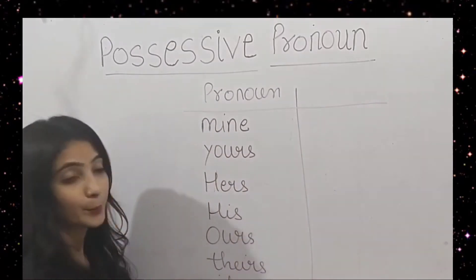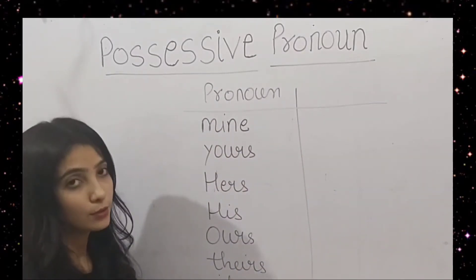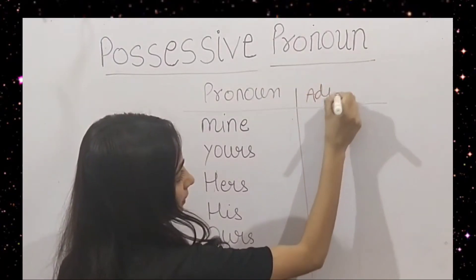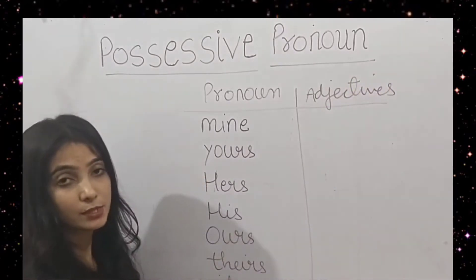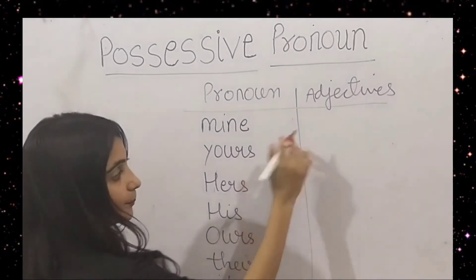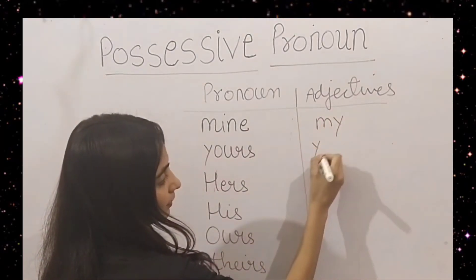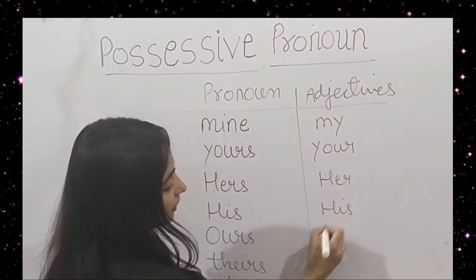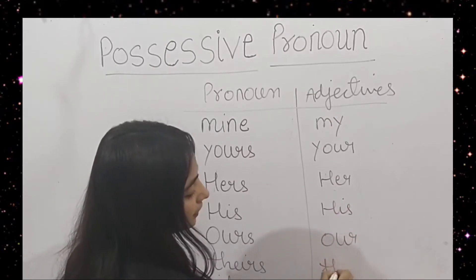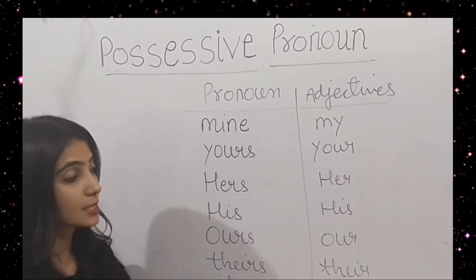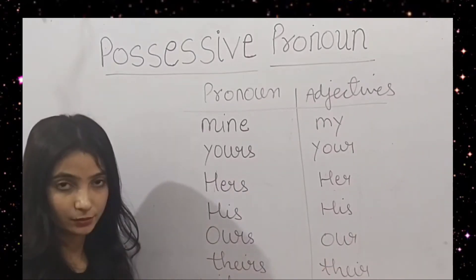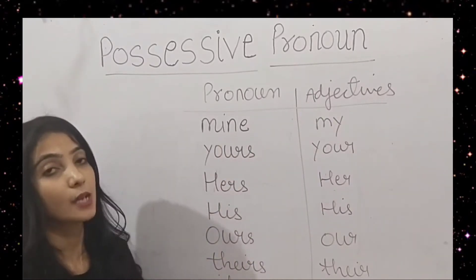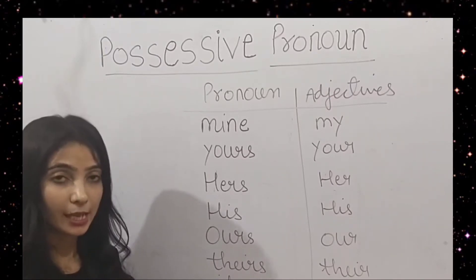Okay students, but in this chapter we will also discuss about possessive adjectives. Possessive adjectives are: my, your, her, his, our, their. So what is the difference between possessive adjectives and possessive pronouns? Let me tell you. Possessive pronouns are the words used to stand alone — they don't need any noun with them.